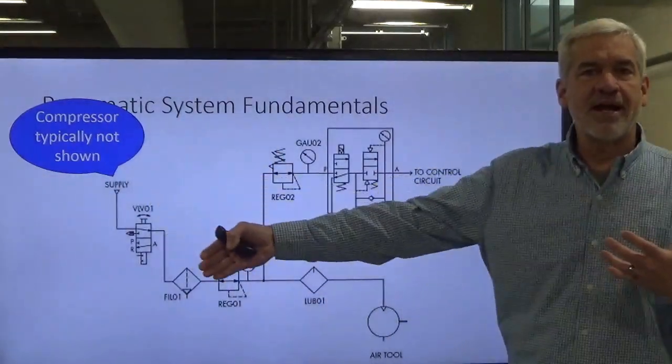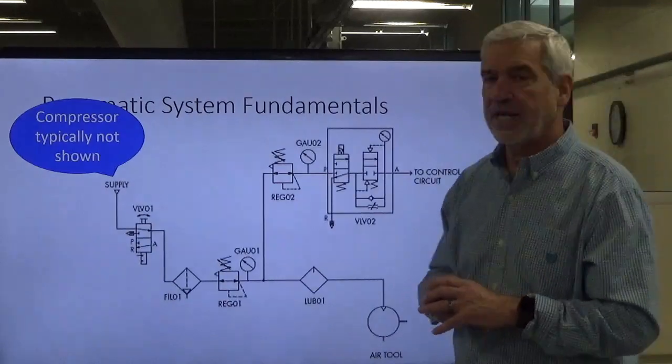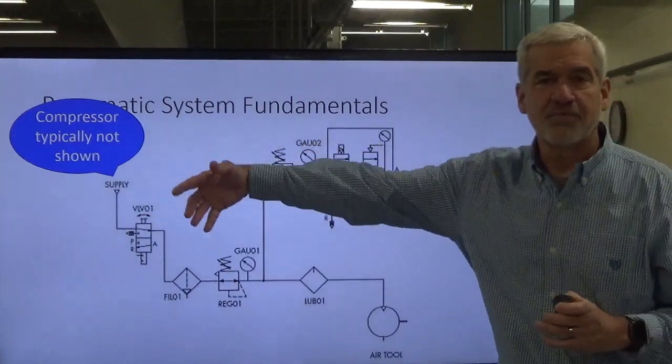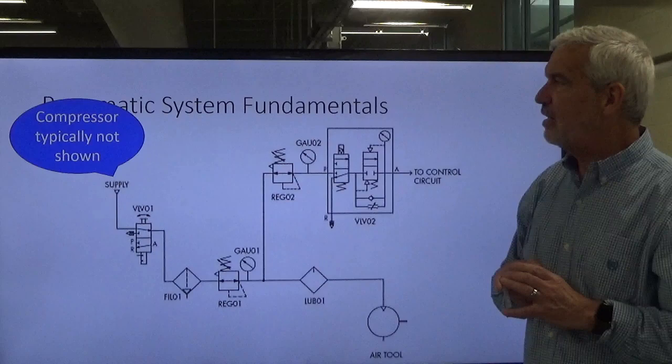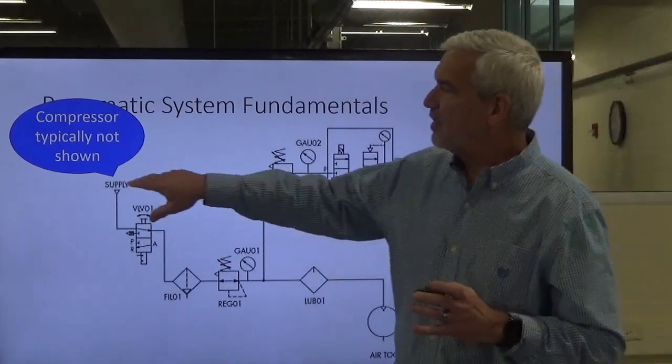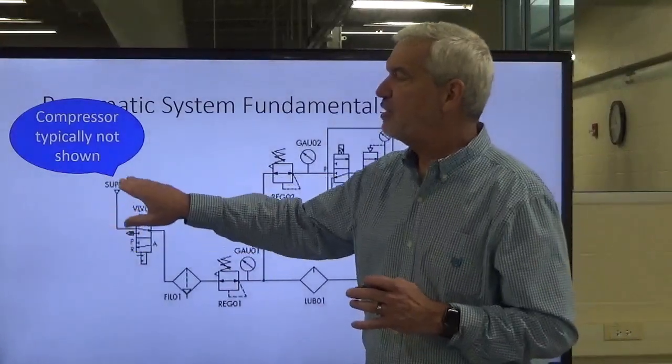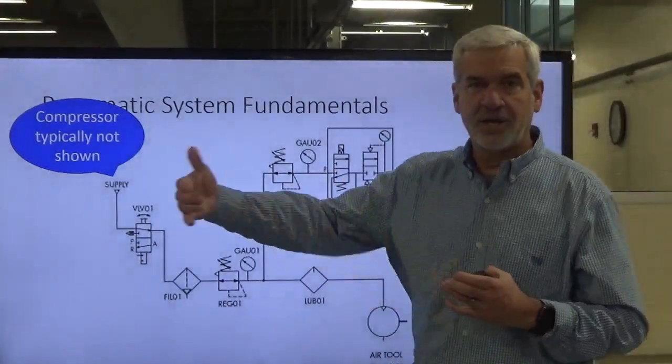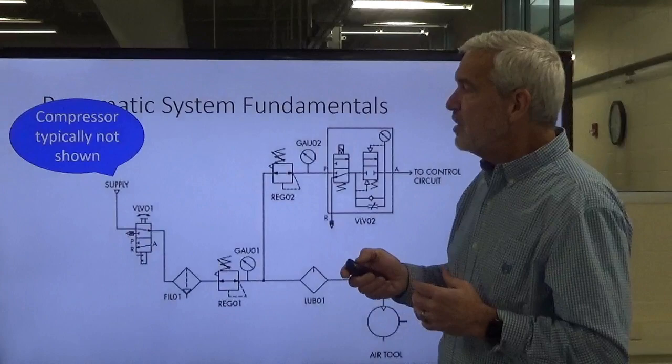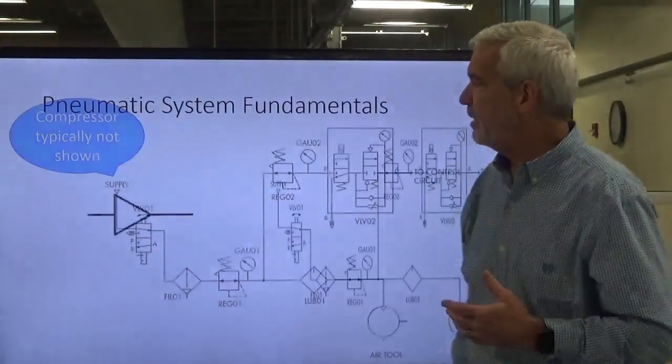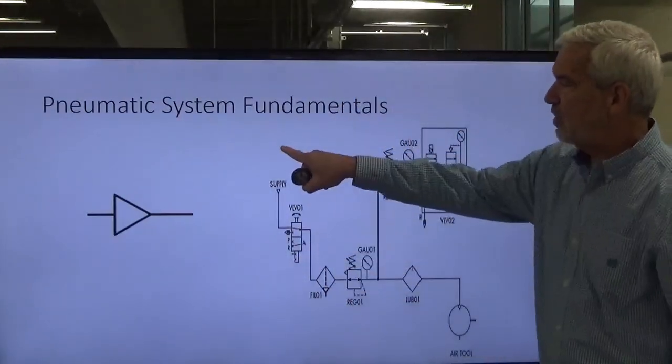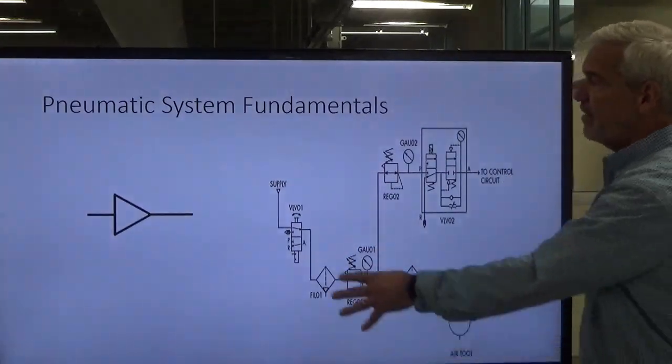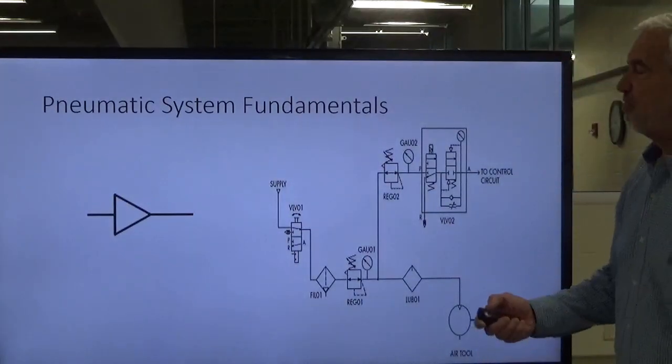One of the first things you're going to have in a pneumatic system is compressed air. However, you typically don't see symbols for a compressor. What you have is a supply port, typically a triangle that shows where supply air enters into the machine.